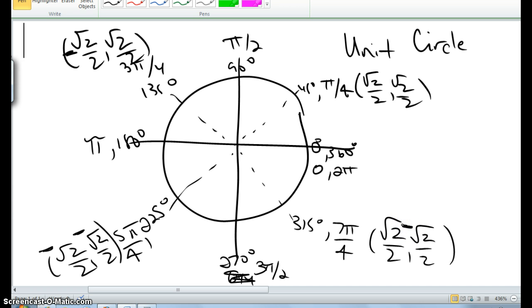All right. So right now you would know the cosine and sine, cosine, sine, cosine, sine, cosine, sine for all of those 45s on the unit circle.